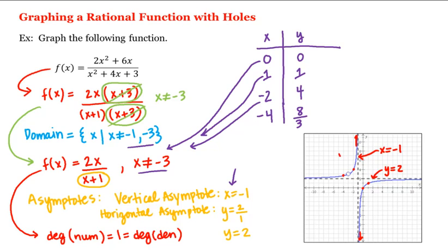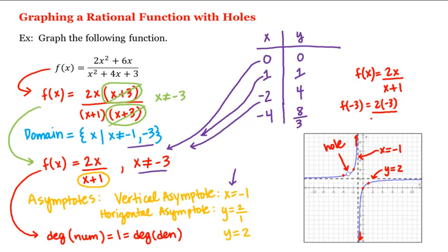Notice there is a hole in the graph at x = negative 3, because negative 3 is not in the domain of this function. Evaluating f(x) = 2x/(x+1) at x = negative 3 gives us 2(−3)/(−3+1) = −6/(−2) = 3, which means this hole is located at (−3, 3), but that point is not on the graph of this function. And this is how we graph rational functions with holes.